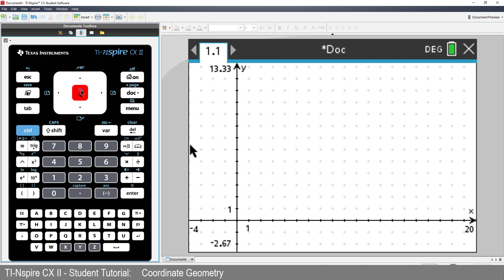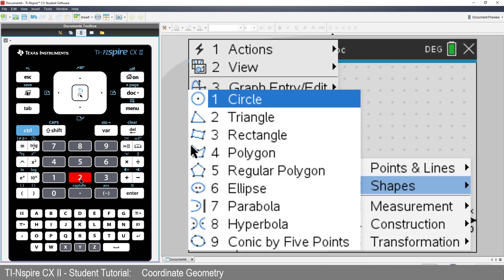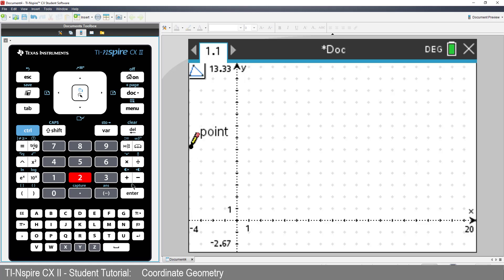We're now ready to explore the problem. Press Menu, Geometry, Shapes and select Triangle. Notice that the cursor changes to a pen. Move the pen over the origin. Click on the origin. This is the first vertex on our triangle.